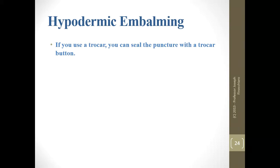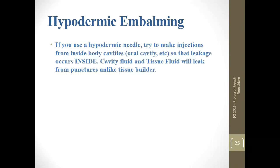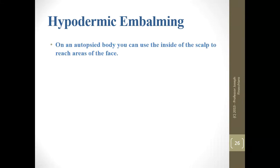If you're using the trocar, use a trocar button to close the hole you made. If you're using hypodermic needles, try to make injections from inside cavities — oral cavity, nasal cavity, etc. — so leakage will occur inside the body. Then try to use hidden spots so that you can glue afterward and the glue will not be seen. Cavity fluid and tissue fluid will leak from punctures, unlike tissue builder. Tissue fluid — basically interstitial fluid — anything in the body will leak out of any hole, so you'll have to glue those later.